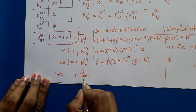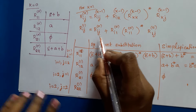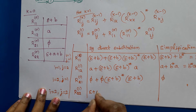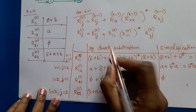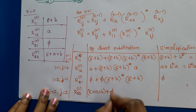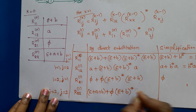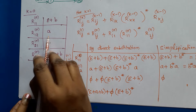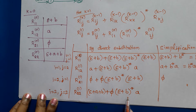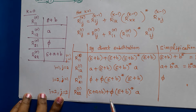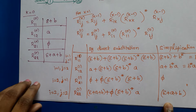For r22 to the power 1, i is 2 and j is 2. Substituting: r22^0 is epsilon plus a plus b, plus r21^0 which is phi, concatenated with (epsilon plus b star), concatenated with r12^0 which is a. Since phi concatenated with any expression is phi, and phi plus any expression is that expression, the result is epsilon plus a plus b. So r22 to the power 1 is epsilon plus a plus b.